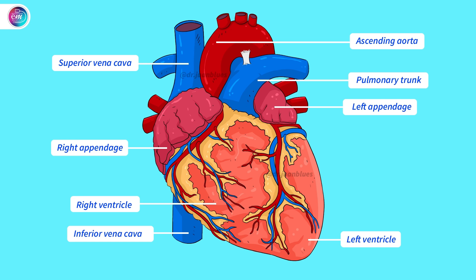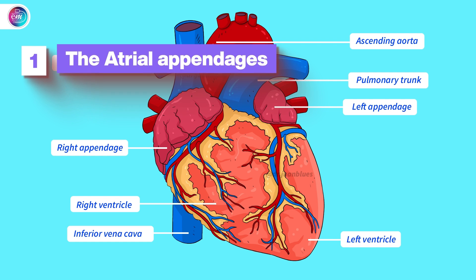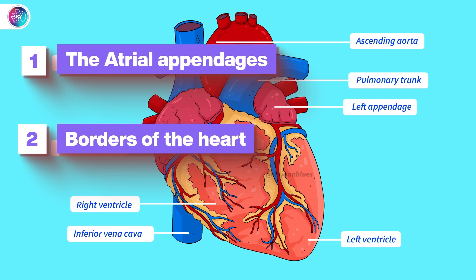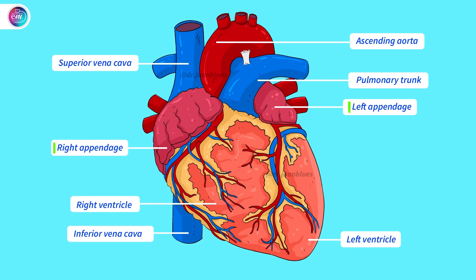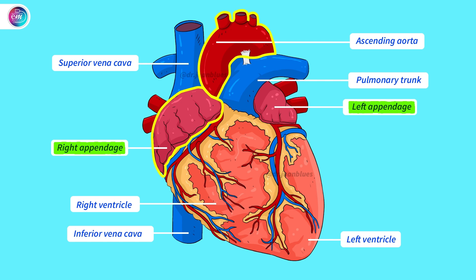Now let's continue describing the external details of the heart by highlighting three features: the atrial appendages, the borders, and the grooves. The atrial appendages are extensions derived from the atria — imagine that an atrium is a house and the appendage is an annex. From an external viewpoint, it looks as though they are hugging the large vessels. The right appendage is connected to the aorta and the left appendage to the pulmonary trunk.